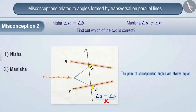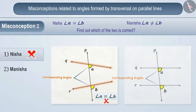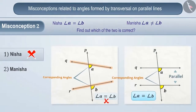Hence, Nisha's understanding is wrong — that is, option 1 is the wrong answer. The correct understanding is that two corresponding angles can be equal only if they are formed by the transversal of two parallel lines.